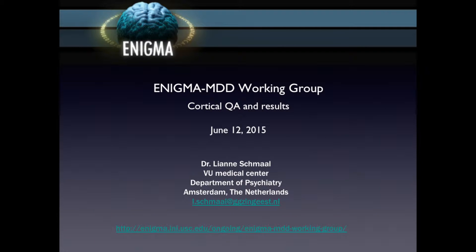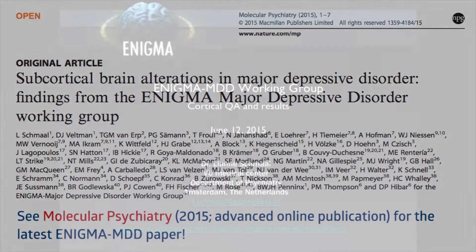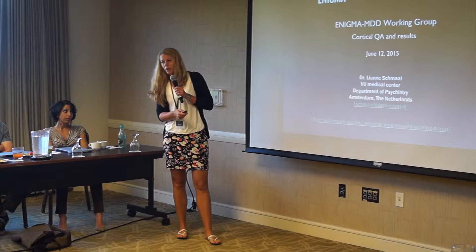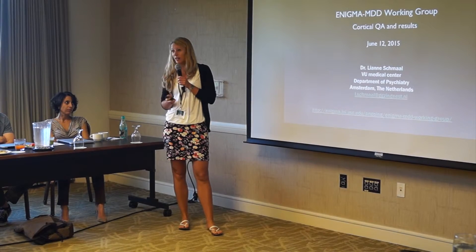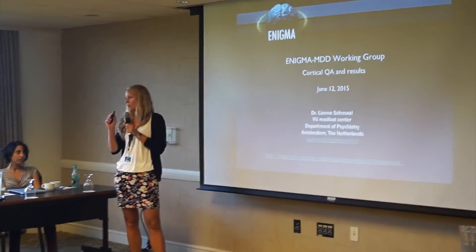I will show you some of our most recent results on the cortical meta-analysis. Chris also asked me to show some of the cortical QA issues we encountered — or not really issues, but we collect information from all the sites about which areas were most problematic, and we make a PowerPoint that we can send out to sites showing some of the issues and potential solutions. I wouldn't call it a cortical QA guideline, but it might help identify some of the cortical QA issues or regions that need inspection.